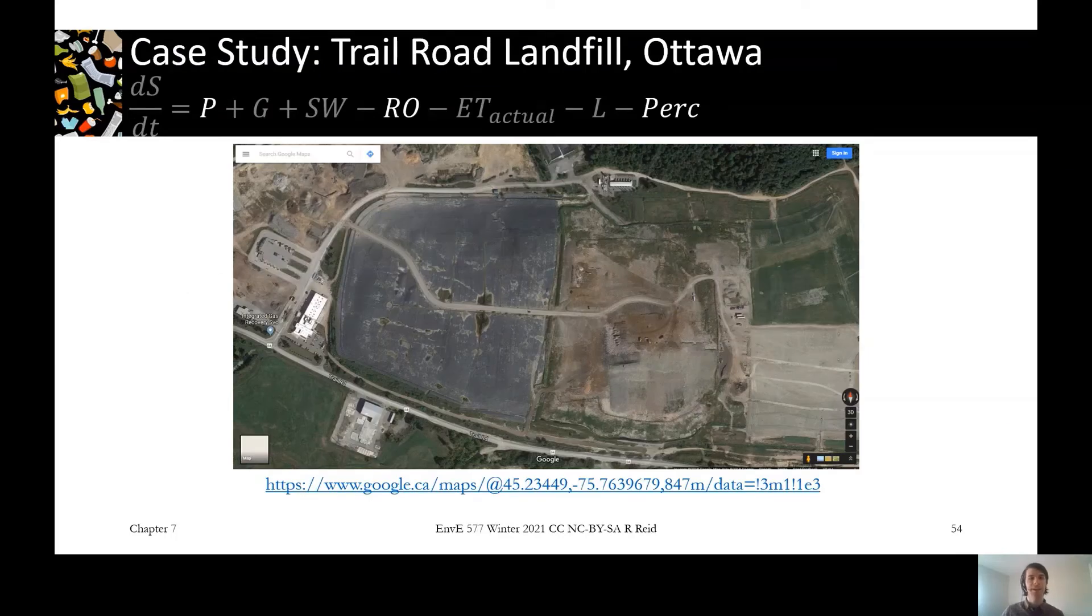For a case study of just looking at some of these variables and how you can play with them, this is the Trail Road landfill in Ottawa. And just by looking at it, you can see on the left side, it's all kind of shiny and black, and then on the right side, it just looks like a normal landfill.